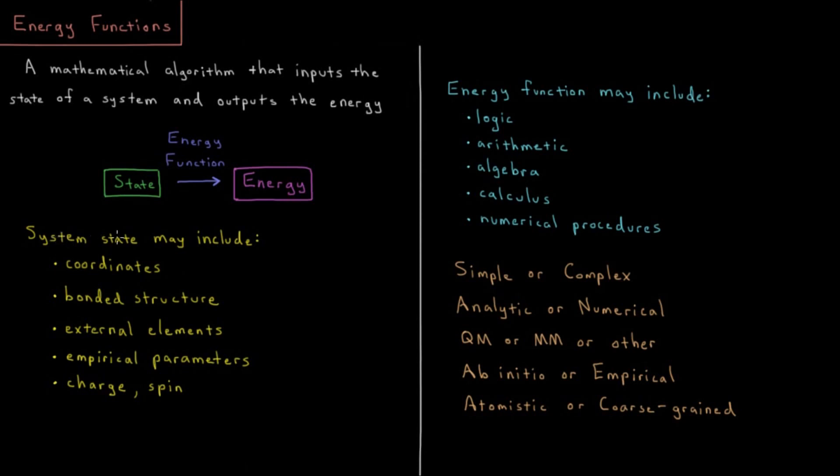So what can we include in the state? The kind of data or information in the state might include coordinates, things like XYZ coordinates of molecules, coordinates of various other structural elements of interest, maybe a boundary to the system, maybe some other kind of coordinate of interest.